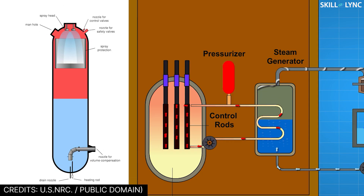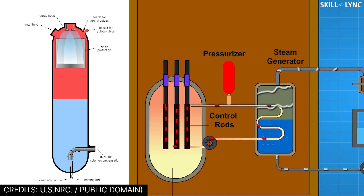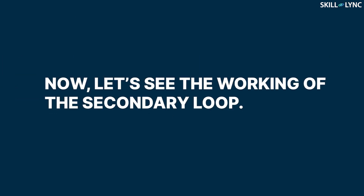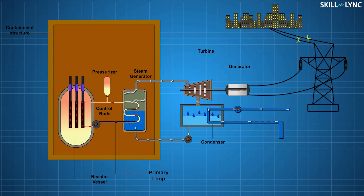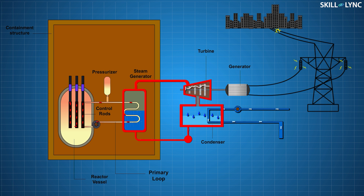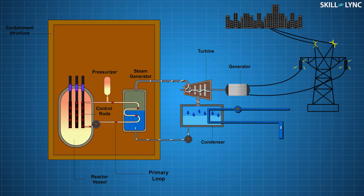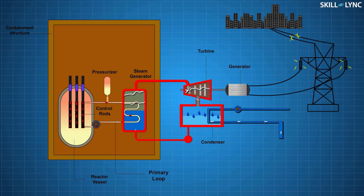A pressurizer is used to maintain the pressure in the reactor vessel according to the change in temperature. Now, let's see the working of the secondary loop. In the primary loop, the heat is extracted from the reactor core by the water, but steam is not yet generated. Thus, a secondary loop is used for generating steam.